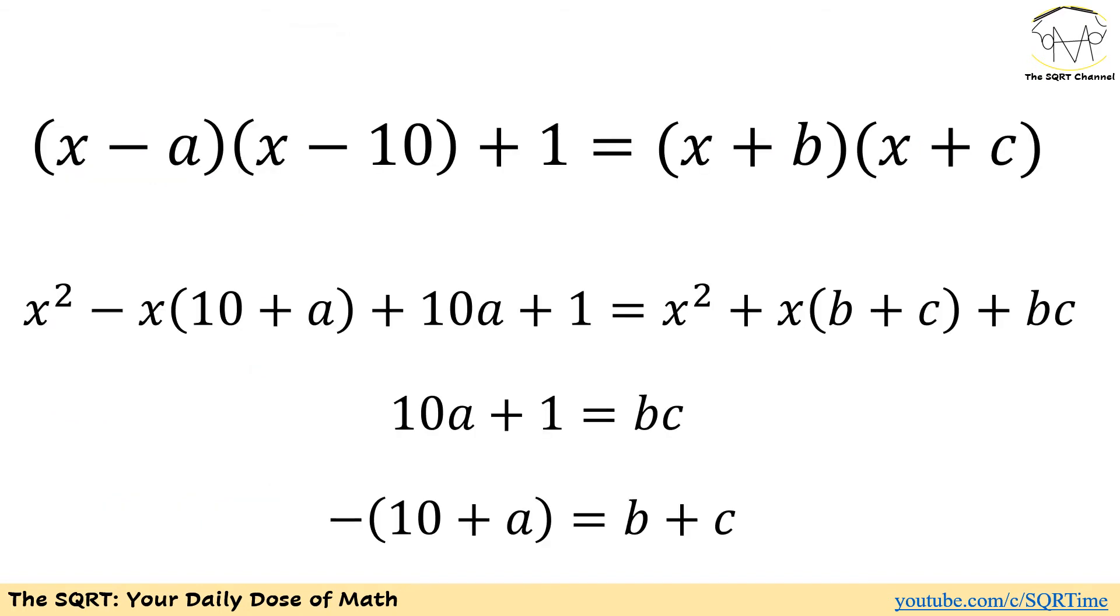To solve this problem, I'm going to apply some simplifications first. We are going to have (x - a)(x - 10). It results in x² - x(10 + a) + 10a and we have +1 on the left hand side. On the right hand side we have x² + x(b + c) + bc.